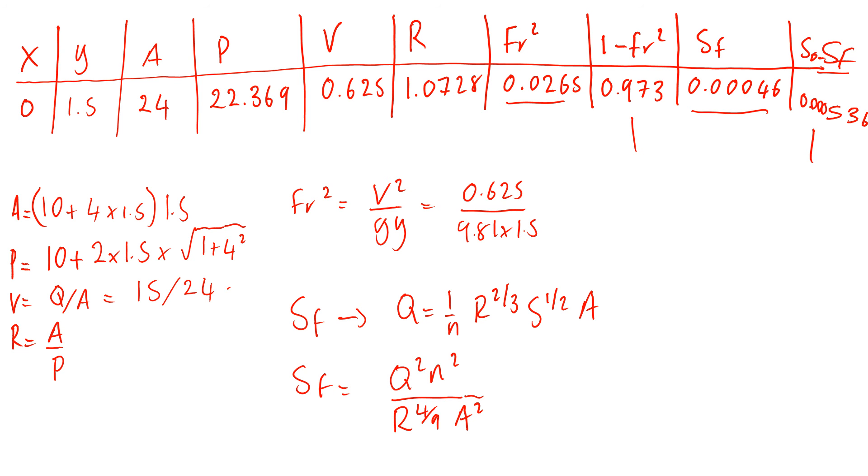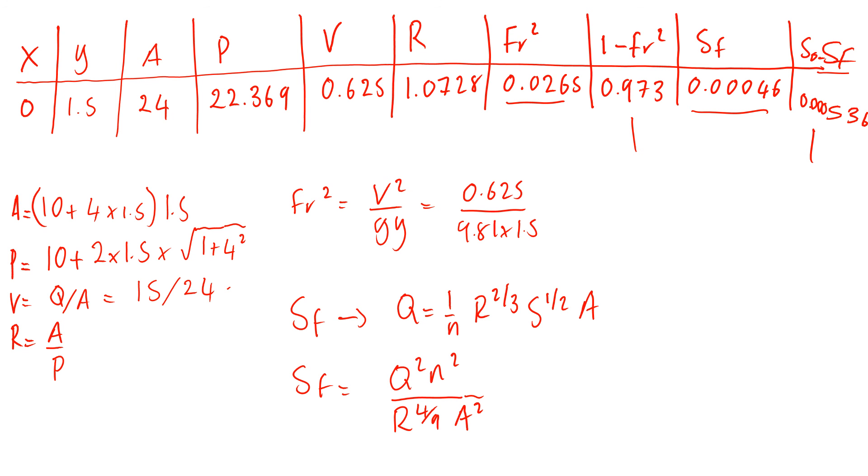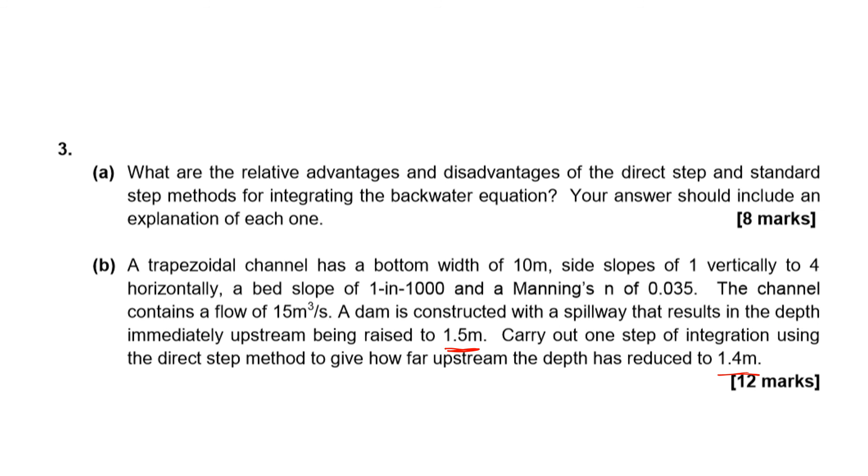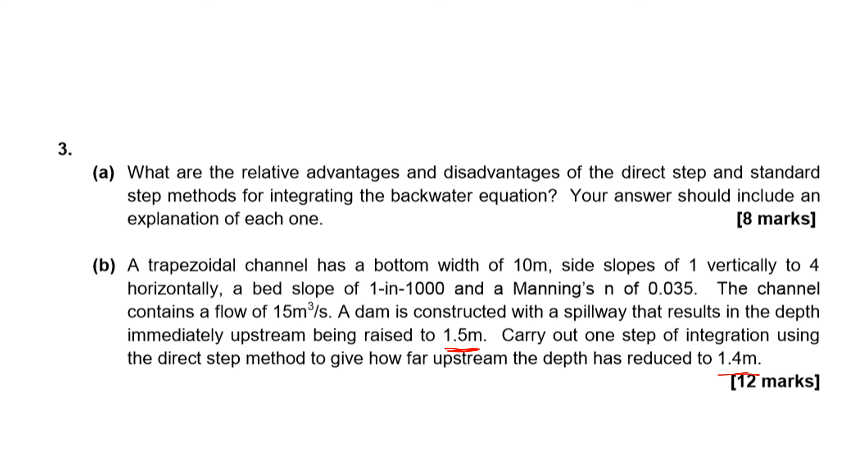That's what you do in an exam. Initially, draw the table and have the y value. It will either be given in the question or you'll have to work it out from the question. In this question it was given, but sometimes you might have to work it out. For example, in one of the lecture examples we had a weir, so you have to do the sill height plus the water height.